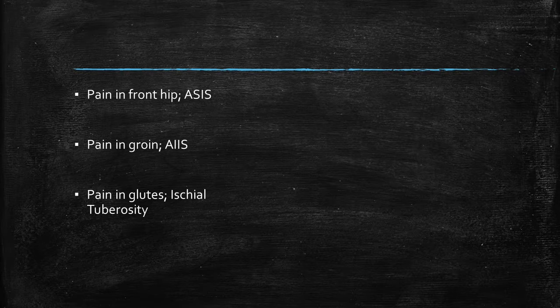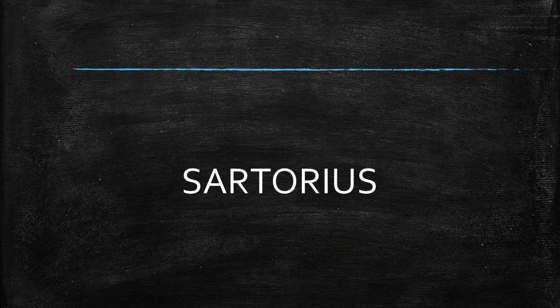In our patient's case, he had pain in the front of his hip and an avulsion fracture of the ASIS on imaging. What muscle in the body can do this? How about the longest muscle in the whole body — the sartorius? So how do we remember that the sartorius muscle originates at the ASIS? Easy — it has ASIS in the name.